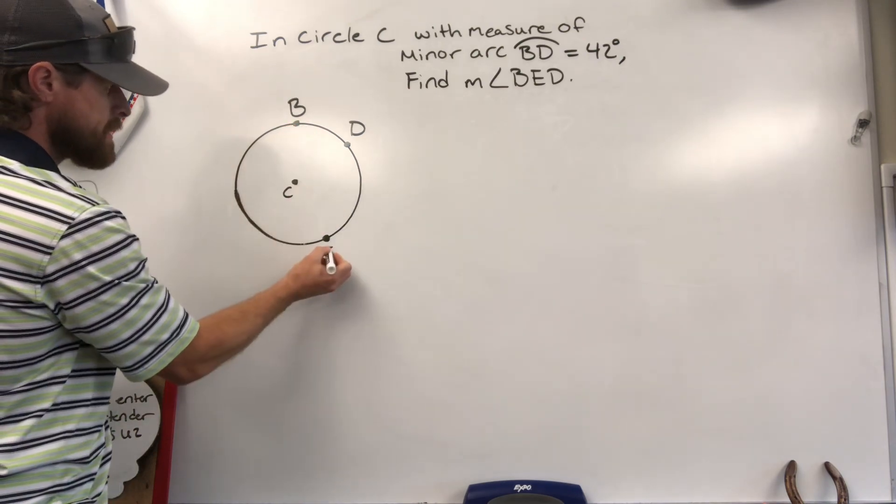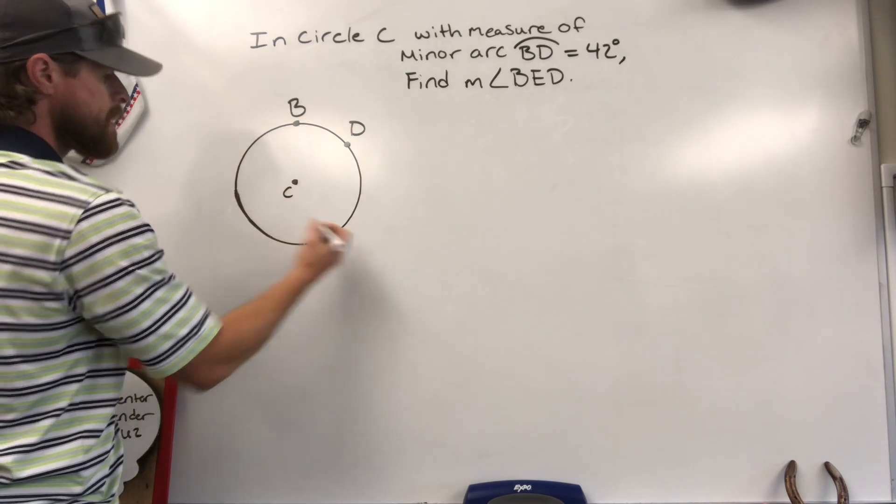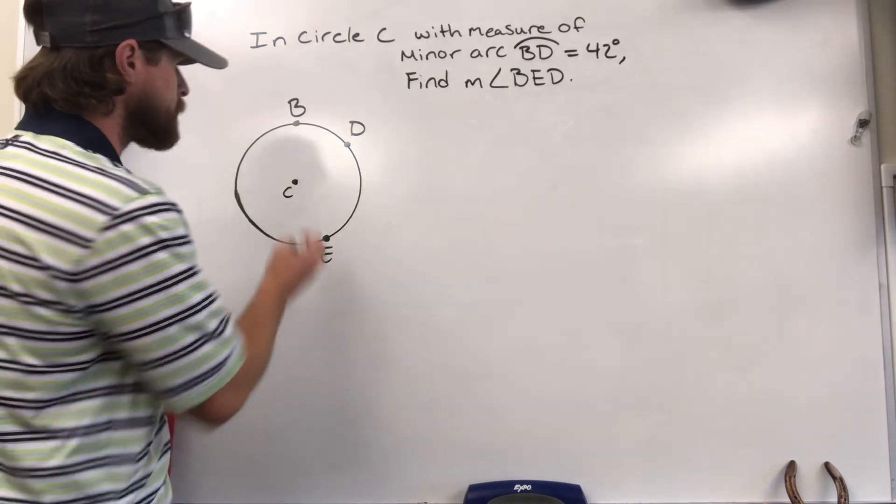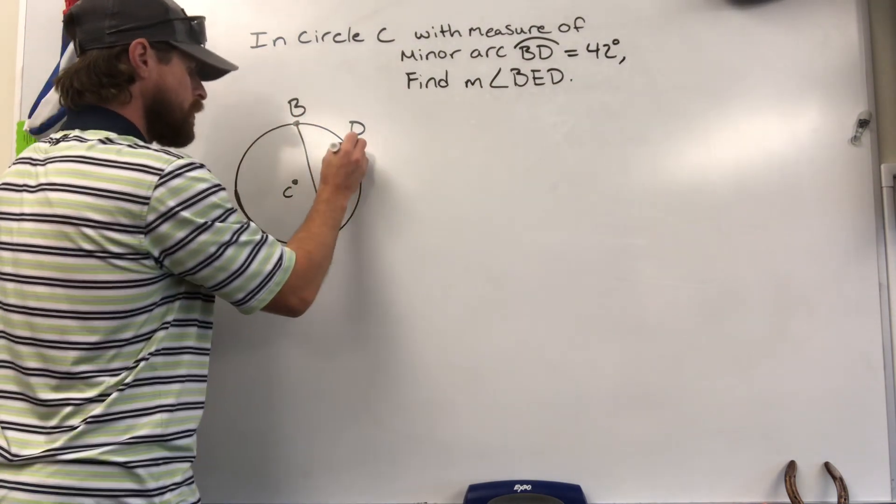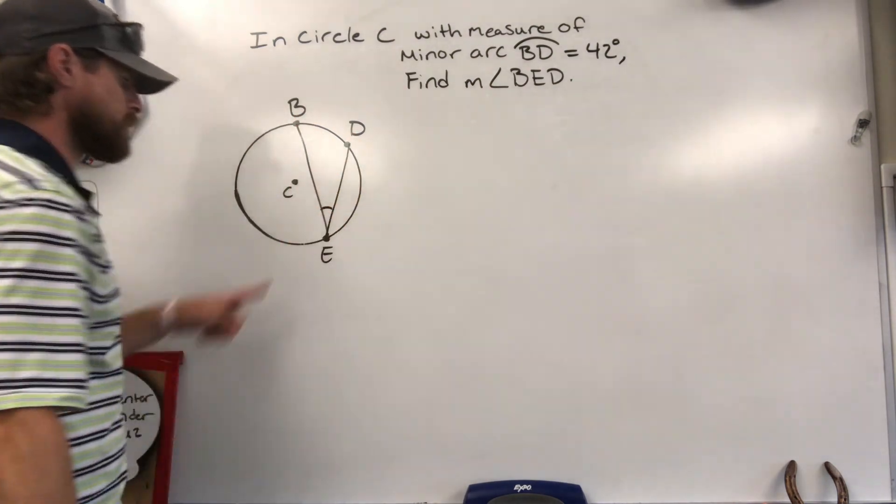We've got a chord which is BE, we've got a chord which is DE, creating an inscribed angle. Let me show you what it looks like. There's our angle measure we're trying to find.